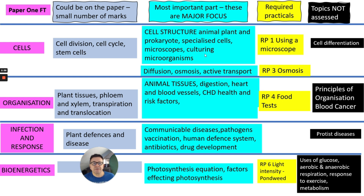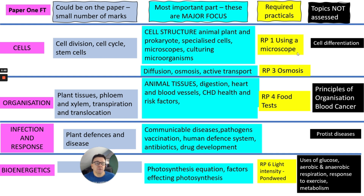For cells, the major focus includes cell structure, microscopes, culturing microbes, diffusion, osmosis, and active transport. Cell division — mitosis and stem cells — is not much of a focus. You still need to know how to use a microscope and the osmosis practical, which most of you would have done with potatoes. In the exam they could ask about carrots, turnips, swedes, or any type of plant tissue. Cell differentiation will not be assessed.